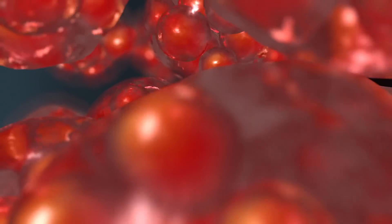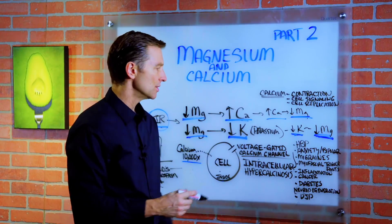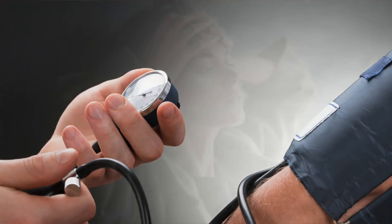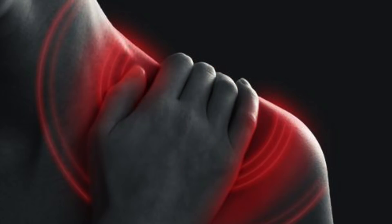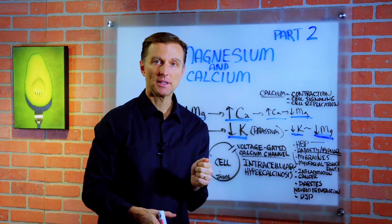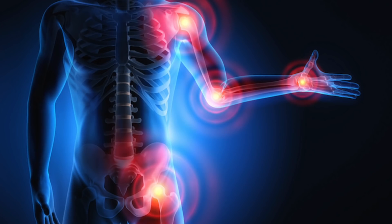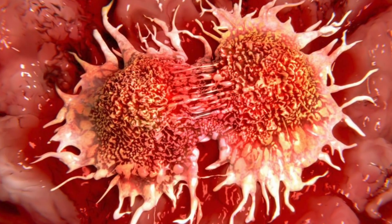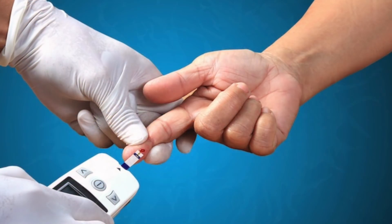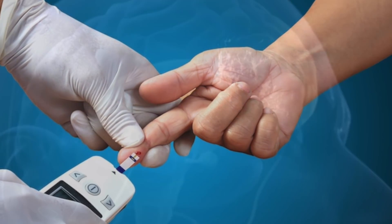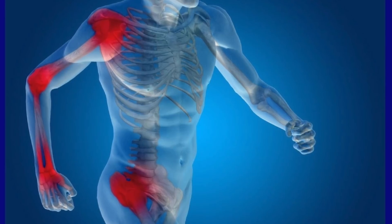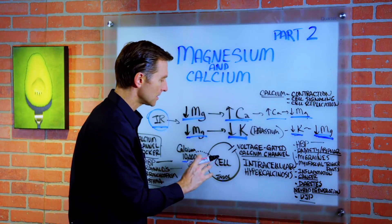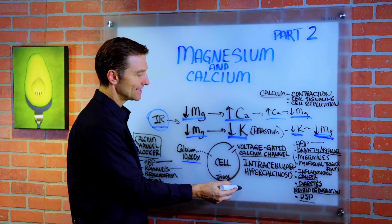If you have too much calcium building up inside the cell, you can have all sorts of issues: high blood pressure, anxiety, bipolar disorder, migraines, myofascial trigger points — those painful knots in the body — inflammation, cancer due to cell signaling problems, diabetes related to insulin resistance, neurodegeneration, and degenerative joint disease. There are just so many problems that can occur from an imbalance of calcium with too much inside the cell.